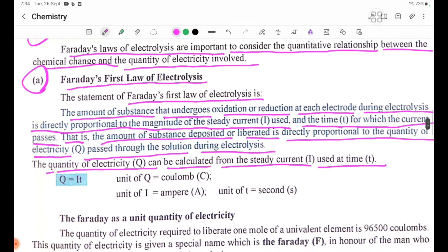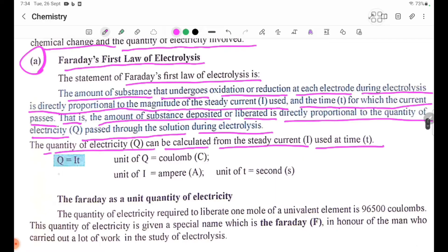The formula is Q = It, where unit of Q is coulomb (C), unit of I is ampere (A), and unit of t is second (s).